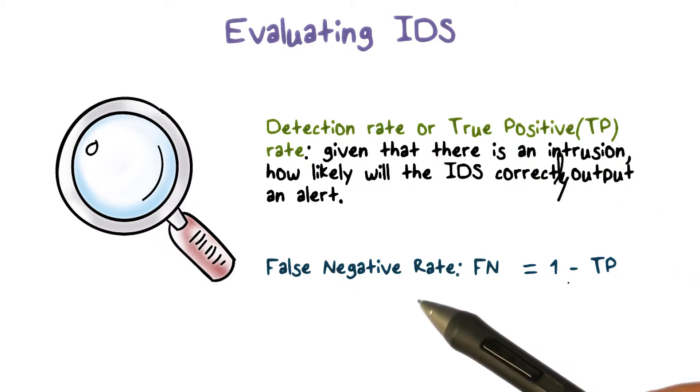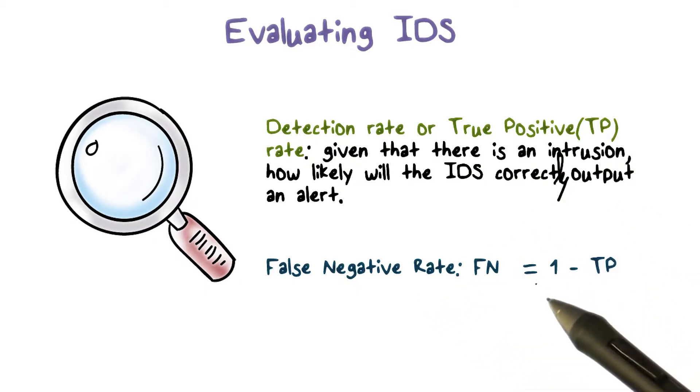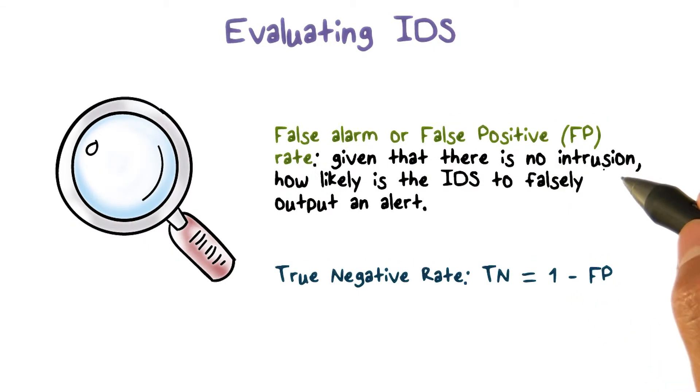We can also use false negative rate. That is, how many intrusions did we miss? Another aspect of detection accuracy is the false alarm rate.